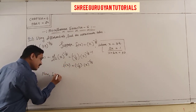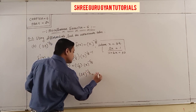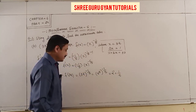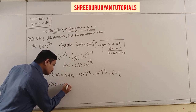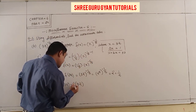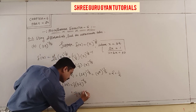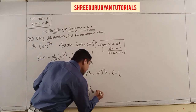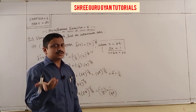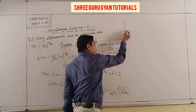Now f(32) = 32^(-1/5) = (2^5)^(-1/5) = 2^(-1) = 1/2. And f'(32) = (-1/5)·32^(-6/5) = (-1/5)·(2^5)^(-6/5) = (-1/5)·2^(-6) = -1/(5·64) = -1/320. Rearranging: -1/(5×64).